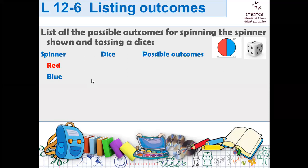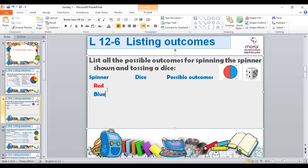List all the possible outcomes for spinning the spinner and tossing a dice. What should we do first? We want to list all the outcomes that could happen if we toss a dice. The spinner has two colors: red and blue. And if you toss a dice, what could you have? Six numbers.